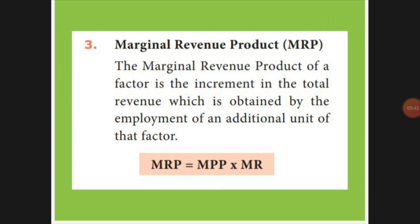Next is the Marginal Revenue Product (MRP). MRP means finally what is left over after meeting all my expenses — salary to employers, expenses for raw materials, extra production costs — the leftover is my firm's profit, which is the revenue. The formula is: MRP = MPP × MR, that is marginal physical product multiplied by marginal revenue.